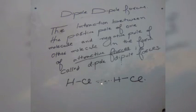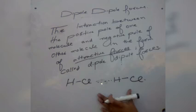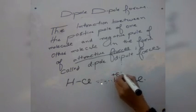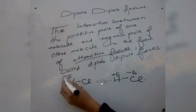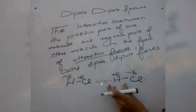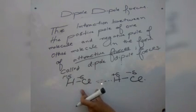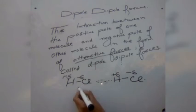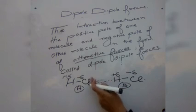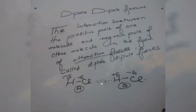This interaction is present between two polar molecules. Between the positive pole of one molecule and the negative pole of another molecule — for example, between molecule A of HCl and molecule B of HCl. It is present between the opposite poles of two neighboring molecules.